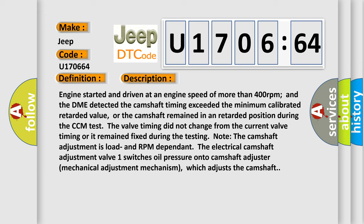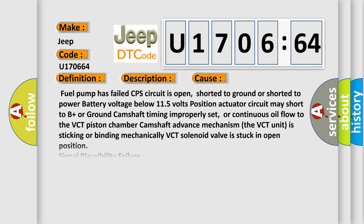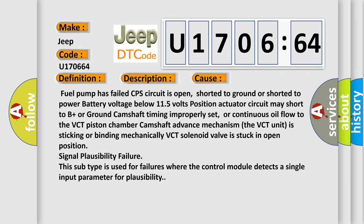This diagnostic error occurs most often in these cases: Fuel pump has failed, CPS circuit is open, shorted to ground or shorted to power, battery voltage below 11.5 volts, position actuator circuit may short to B plus or ground, camshaft timing improperly set, or continuous oil flow to the VCT piston chamber camshaft advance mechanism. The VCT unit is sticking or binding mechanically, VCT solenoid valve is stuck in open position, or signal plausibility failure. This subtype is used for failures where the control module detects a single input parameter for plausibility.